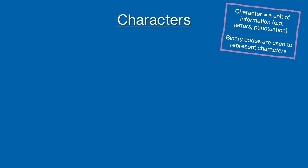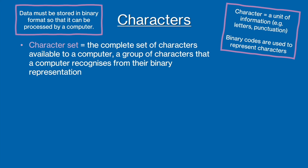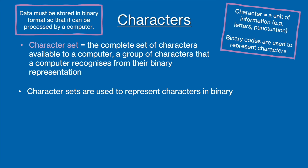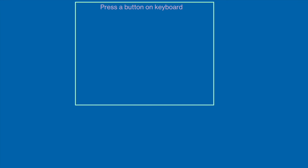If you look at the keyboard of your laptop or your phone, you will see a bunch of different letters, numbers, and symbols. These are characters. Characters are units of information like letters or numbers that are represented using binary codes. This is because data must be stored in a binary format so that it can be processed by the computer. To represent these characters in binary for the computer to use, character sets are used. Character sets are the complete set of characters available to a computer.